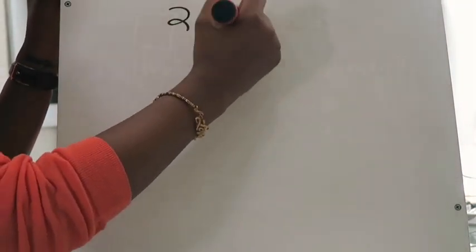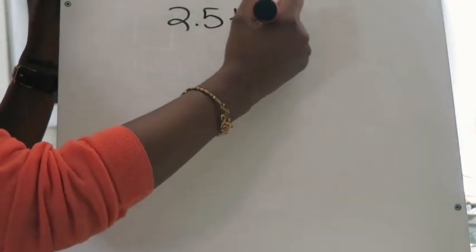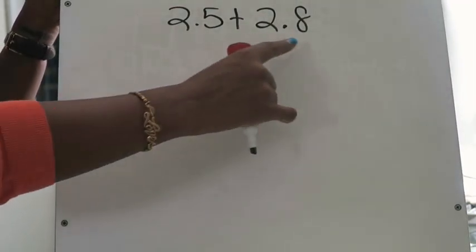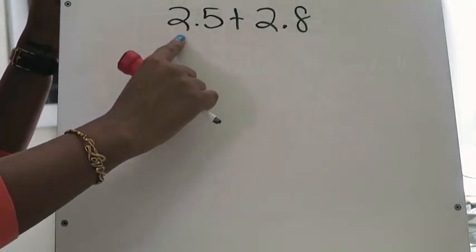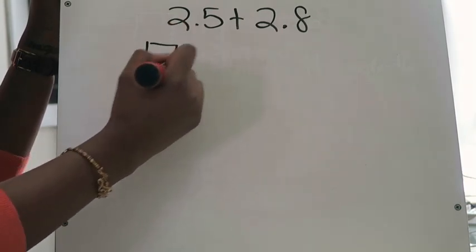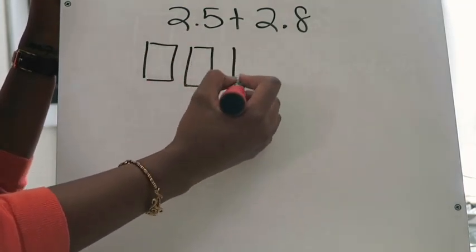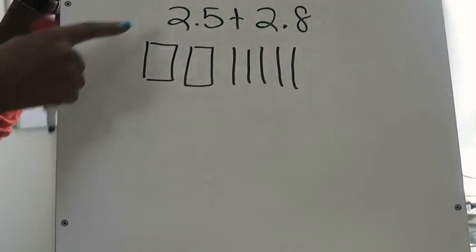In our first example we are going to be adding the following decimals — not 2.5, but, like a mathematician, 2 and 5 tenths plus 2 and 8 tenths. Those are my two addends: addend number one and addend number two. The first thing I'm going to do is model both of my addends. So first I'm going to model 2 and 5 tenths: I have two wholes, so I'm going to draw one, two, and I have five tenths, so I'm going to draw five tenths — one, two, three, four, five. That is my first addend modeled.